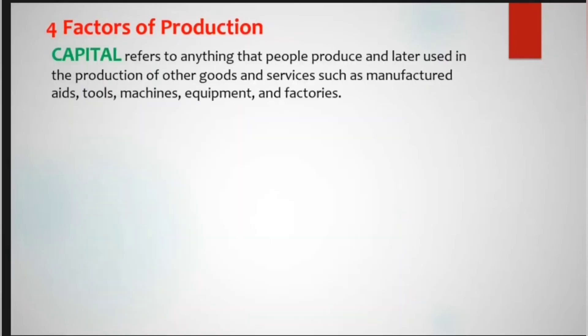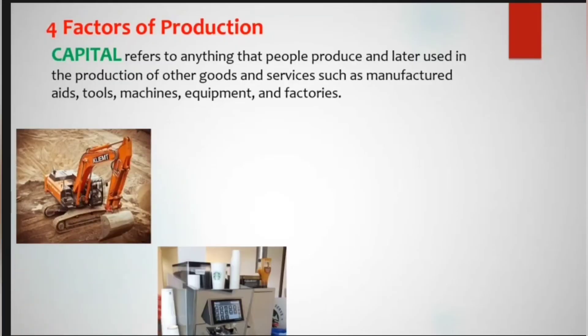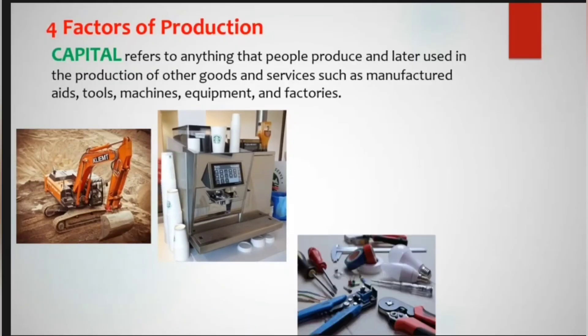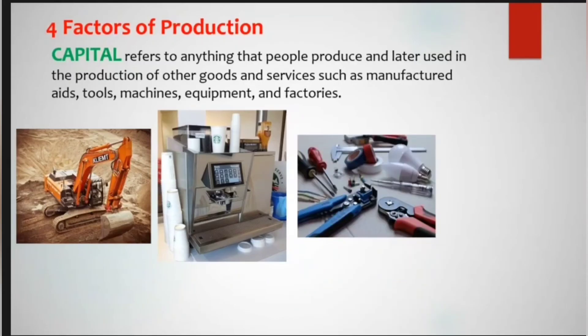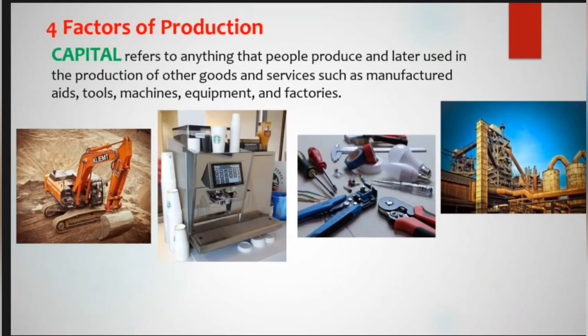Next is capital. Capital refers to anything that people produce and later use in the production of other goods and services, such as manufactured aids, tools, machines, equipment, and factories. These are products that create other products. For example, in a factory, the building, machines, and equipment used to produce final products are called capital.